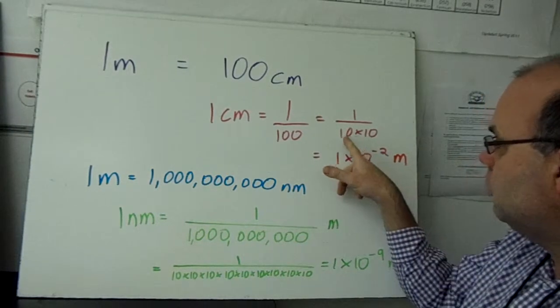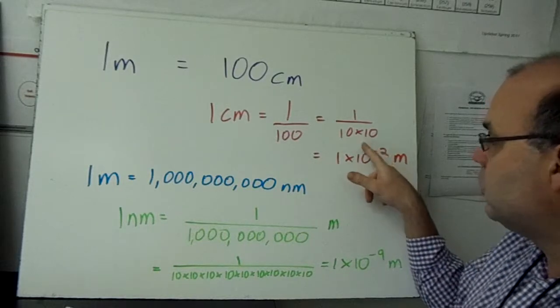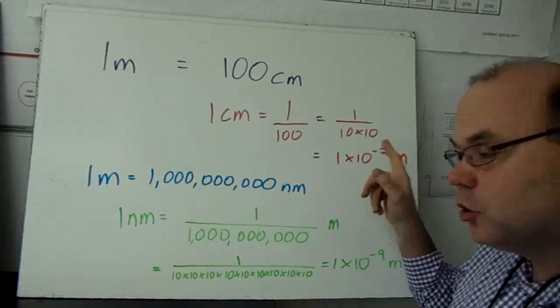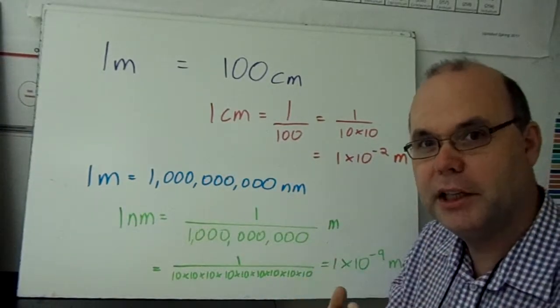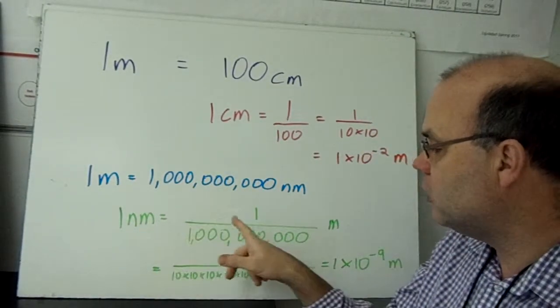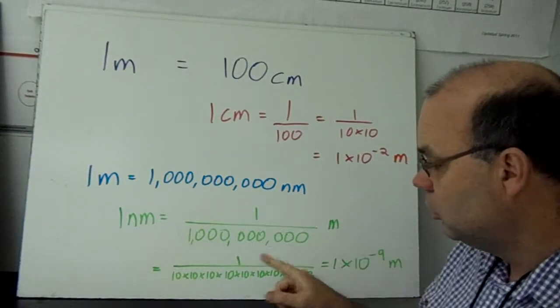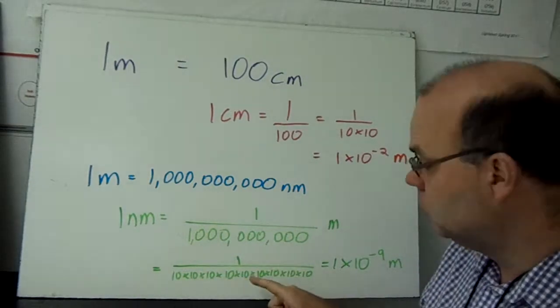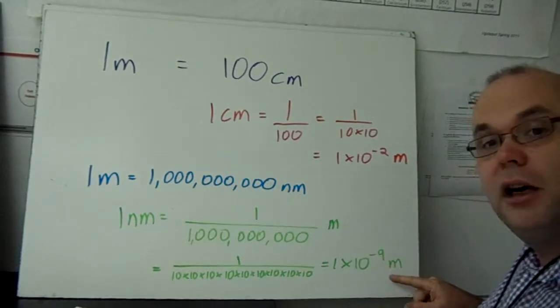It's 1 times 10 to the minus 2. It's minus 2 because there's two tens, 10 times 10. And it's minus 2 because we divided by 10 times 10. That's much more important when we're dealing with nanometers. There's a billion nanometers in a meter, so one nanometer is 1 divided by a billion meters, which is 10 times 10 times 10, nine times.